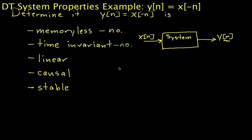Hello and welcome to this part 2 of this video in which we are determining the properties of the discrete time system defined by y[n] = x[-n].